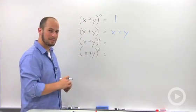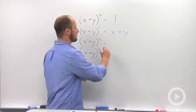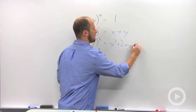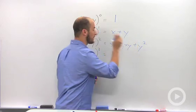x plus y squared. We know this is one of our special formulas, so this is just going to give us x squared plus 2xy plus y squared.